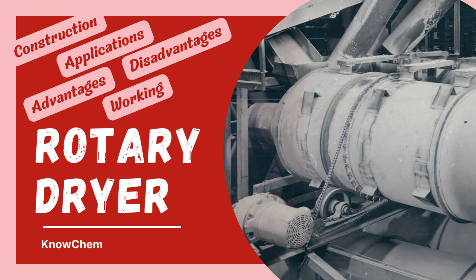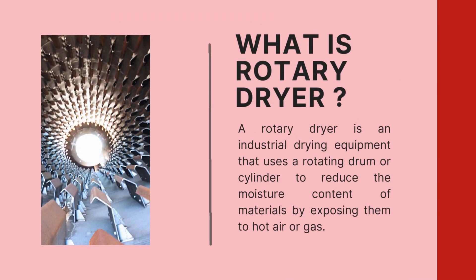Let's begin our discussion with what is a rotary dryer. As the name says, a rotary dryer is a rotating piece of equipment that uses either a rotating drum or a cylinder to reduce the moisture content of the material fed into it. The wet materials are exposed to hot air or hot gas, and thus the moisture is carried away with the current of hot air or gas.